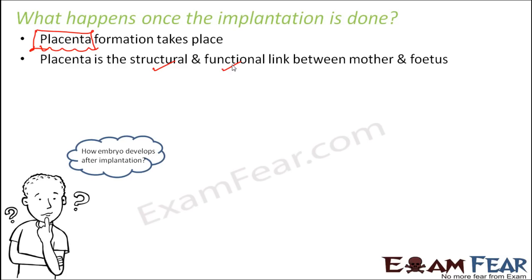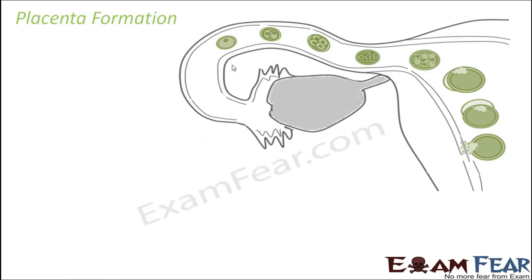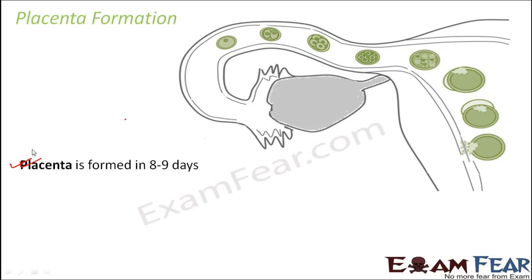The question is how exactly the embryo will develop after implantation — how this placenta will be formed and what stages the inner mass of cells undergoes to develop into a small baby. The placenta is formed in 8 to 9 days; it doesn't happen in a moment. The placenta structure is composed of two components: the fetal placenta and the maternal placenta.